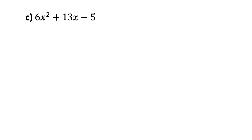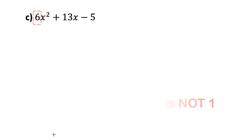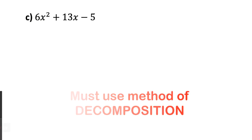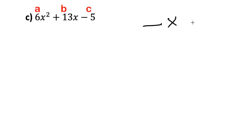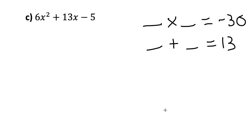Part c is similar difficulty and then we'll get some variations. For part c, the leading coefficient is 6 — we check if it can be common factored out, but 6 doesn't go into 13 and 5, so we factor by decomposition. I need numbers with a product of a times c — 6 times negative 5 is negative 30 — and a sum of the b value, 13. With a negative product, one integer is positive and the other negative. The integers that work are 15 and negative 2: 15 × (−2) = −30 and 15 + (−2) = 13.